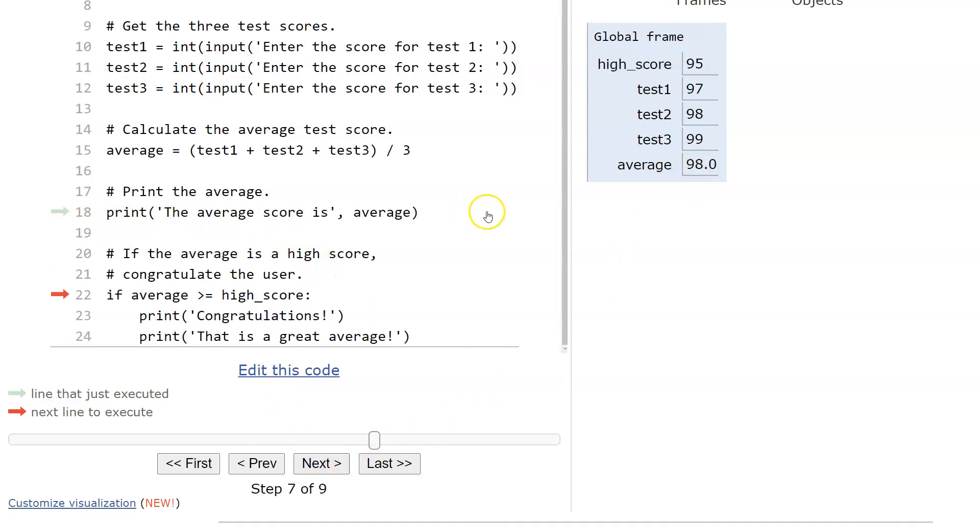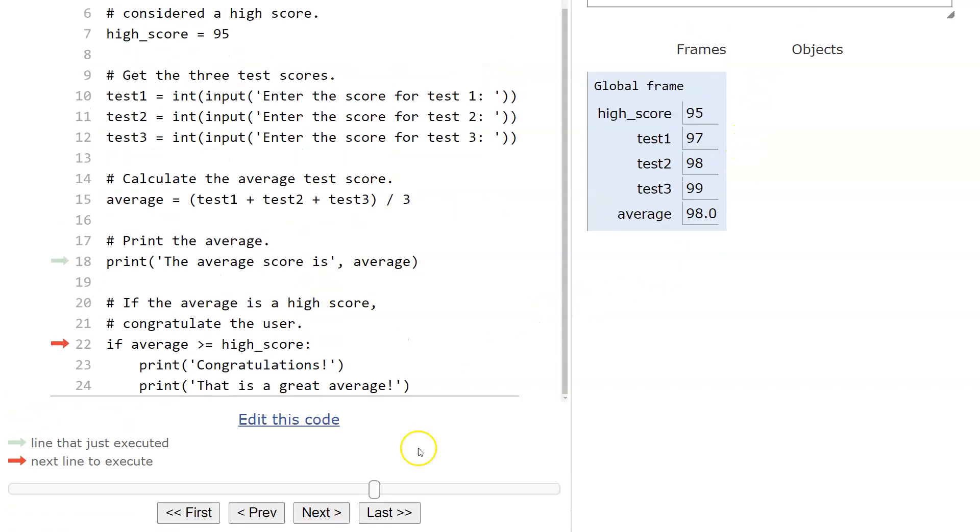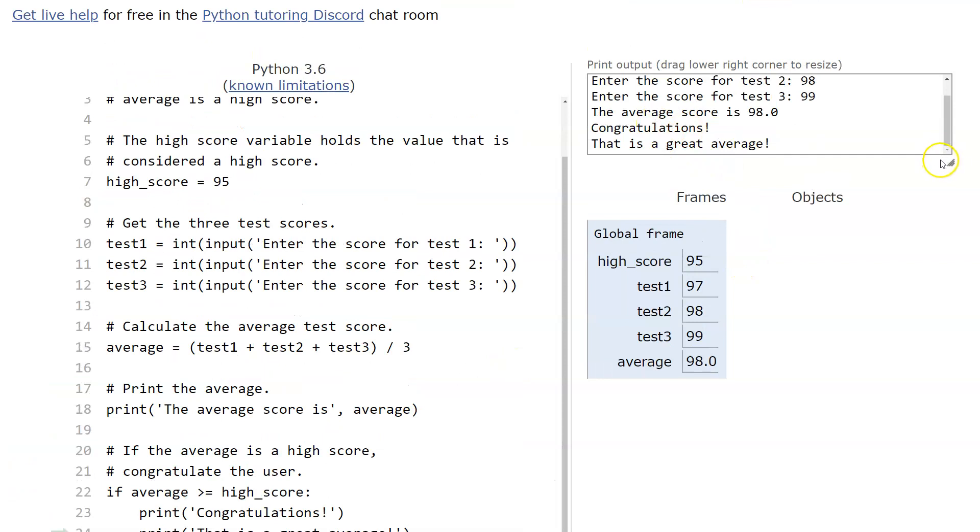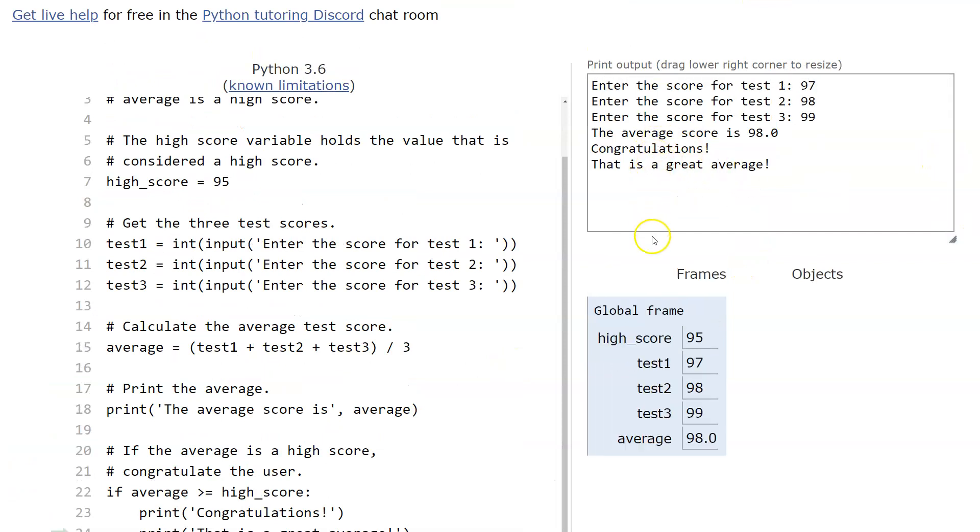So now watch as it comes down here. So we're going to say the average score is, which is up here, but I'm leaving it so I can use the next. Now notice how it went to this. If the average is greater than or equal to the high score, which it is, then it's going to go ahead and print congratulations, that's a great average, and that's what would have happened up here.